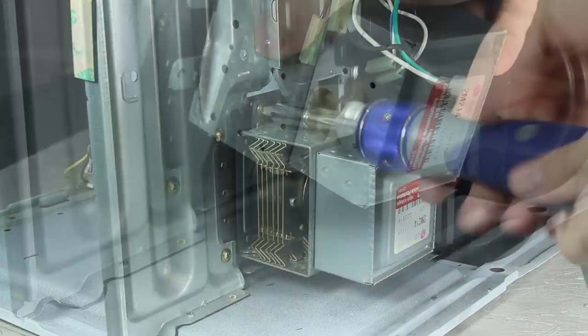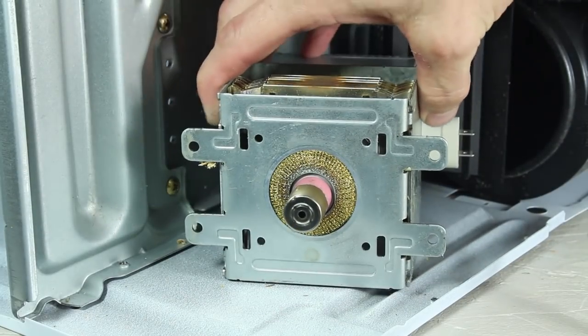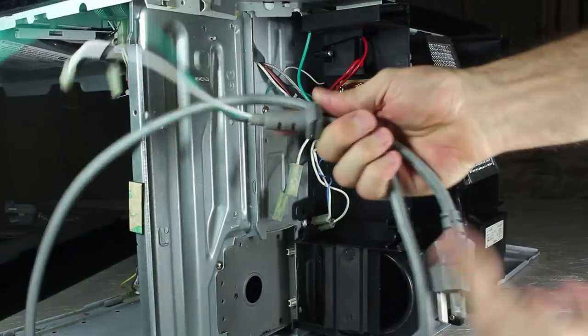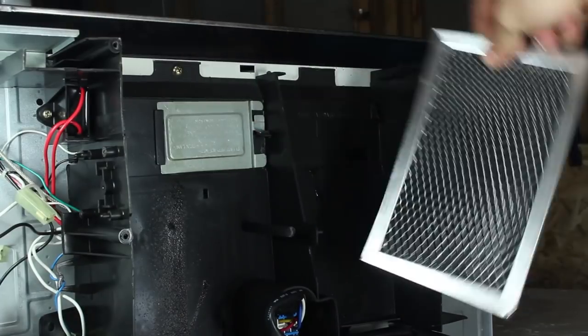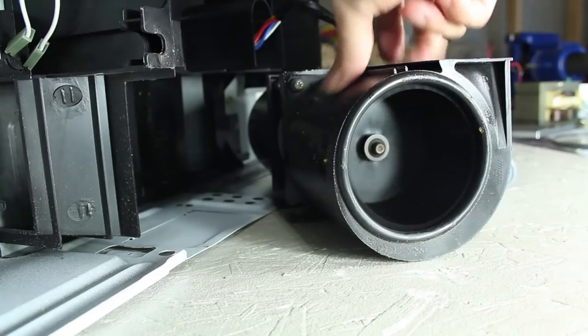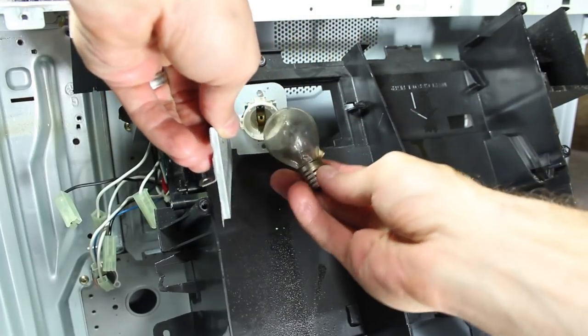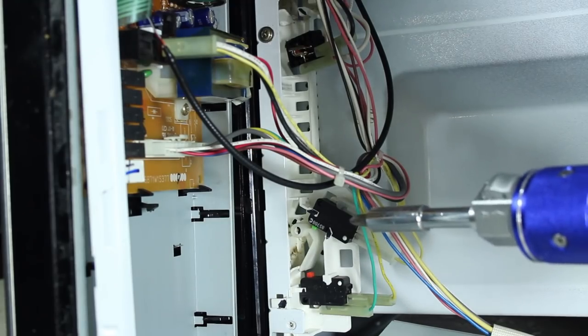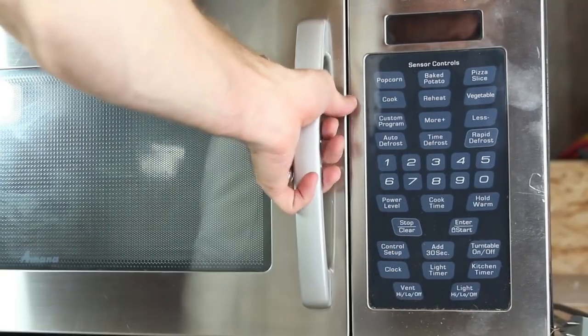The magnetron is the component that generates the microwaves that cook your food, and I've got that disconnected now. While I'm here, I'll salvage the power cord, this charcoal filter, and an AC blower motor that's still in great shape. Here's another high voltage light bulb, and some switches. These three switches prevent the microwave from turning on until the door is shut.